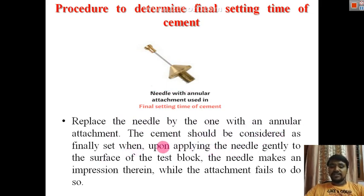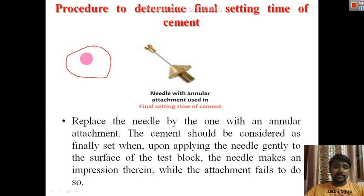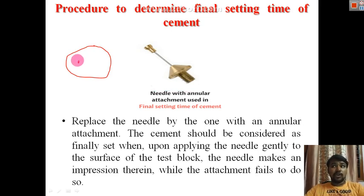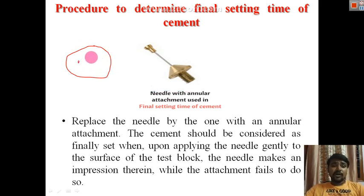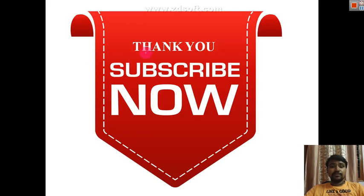Replace the needle with the one with annular attachment. The cement is considered finally set when, upon gently applying the needle to the surface, it makes no impression on the cement paste. Continue testing at different positions on the mold surface until no impression is observed — that time is the final setting time of the cement.